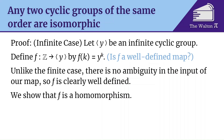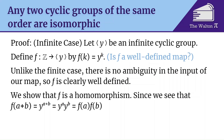Now we show that f is a homomorphism. We start with f of a plus b, which is y to the a plus b, which is y to the a times y to the b, which is f of a times f of b. Notice that the input uses addition while the output uses multiplication — this is still a homomorphism because addition is the group operation in the integers and multiplication is the group operation in the group generated by y. So f is a homomorphism.